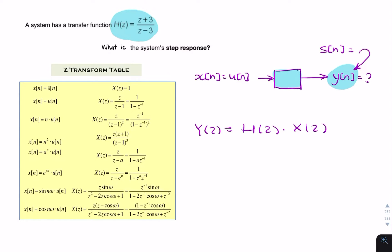Our unit step corresponds in the z domain to z over z minus 1. So x of z is simply z over z minus 1.